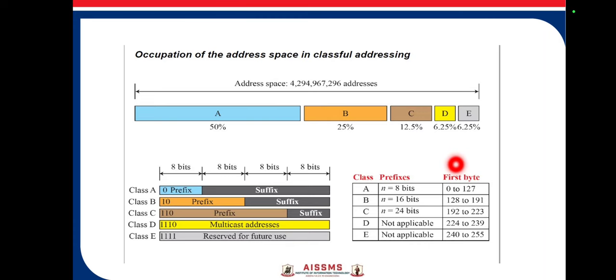In class A, the address space is divided into four octets, that is eight bits each. It is referred to using a prefix and suffix. We will see each and every class in detail.